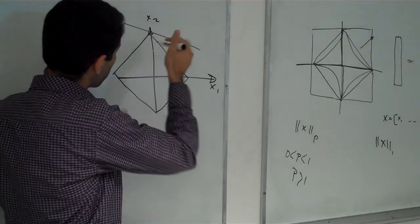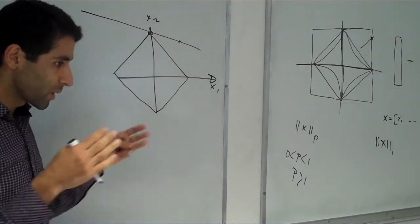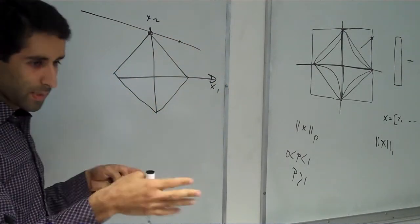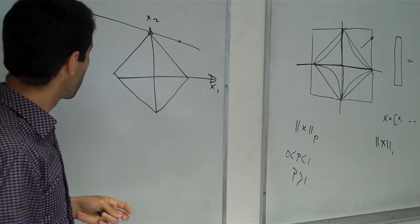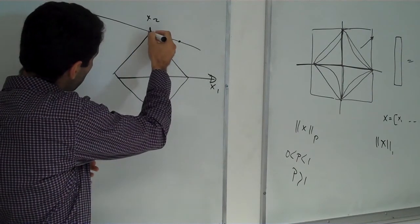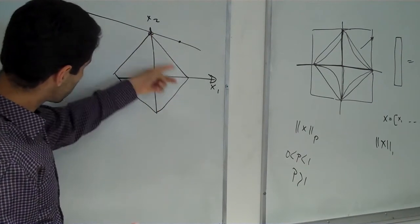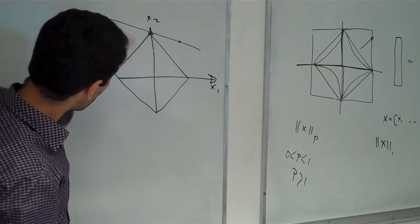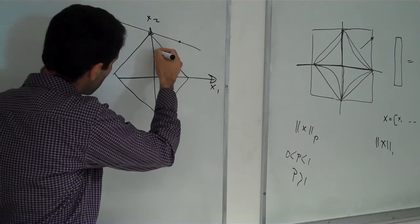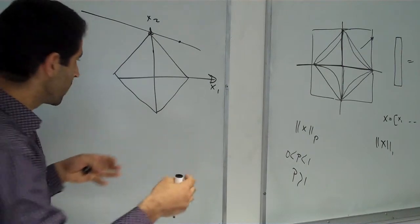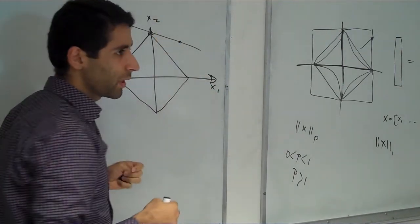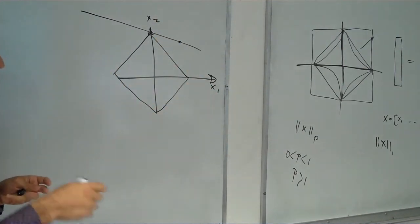As you can see, because of some constraints that I will say about, this line crosses this norm in one point, and this point is on this x, and automatically one of these x comes to 0.